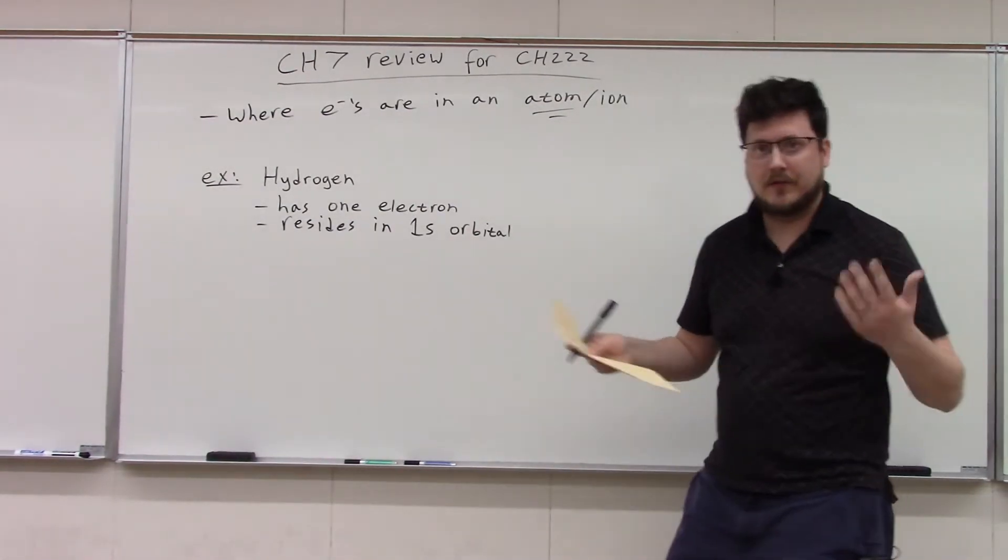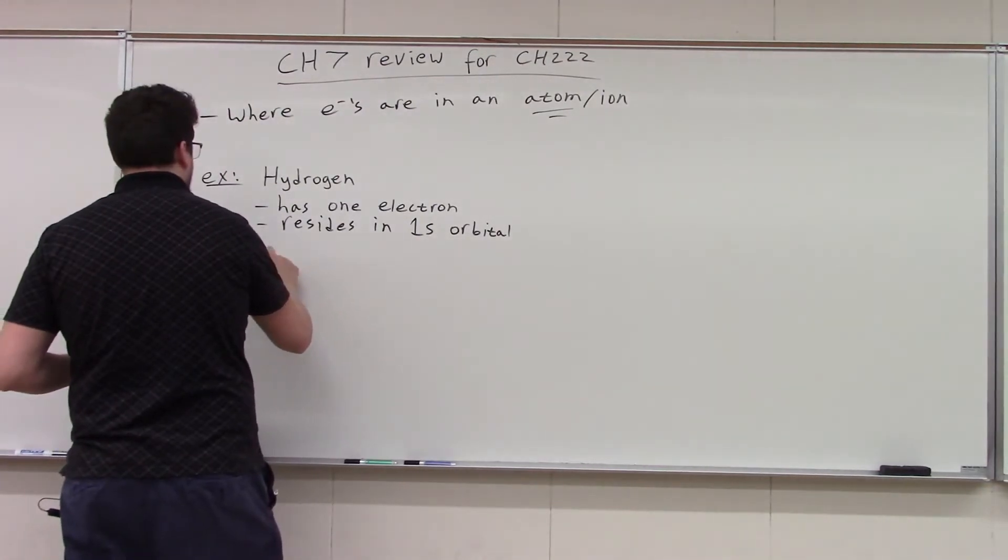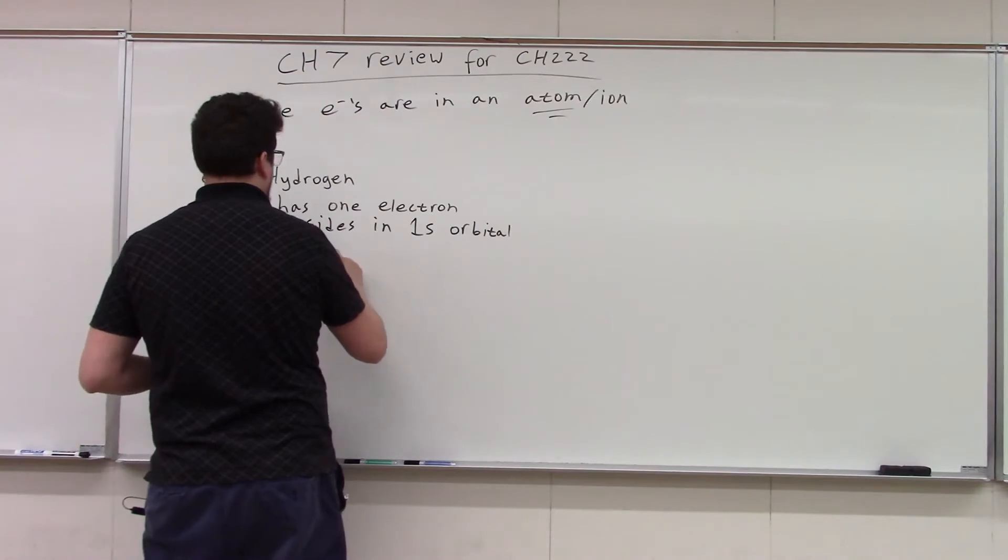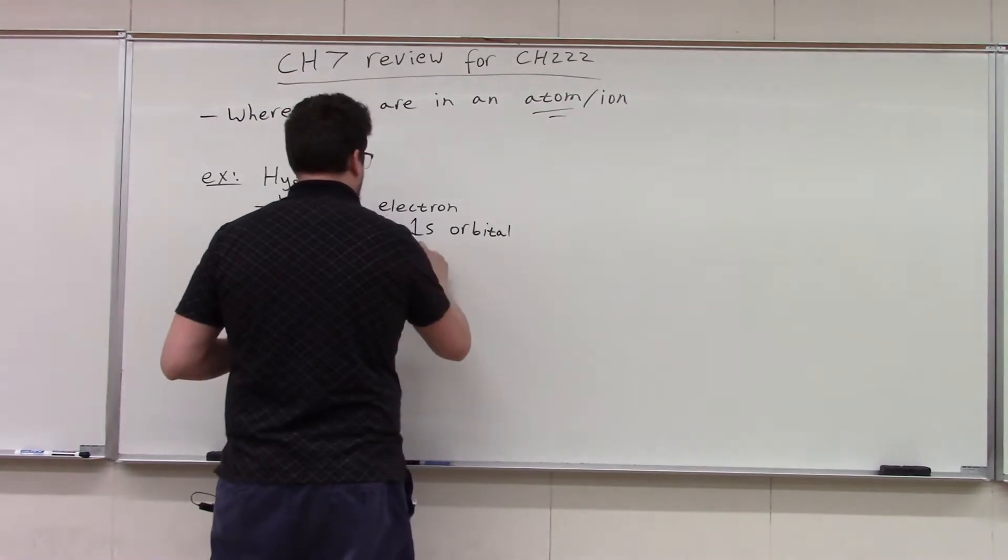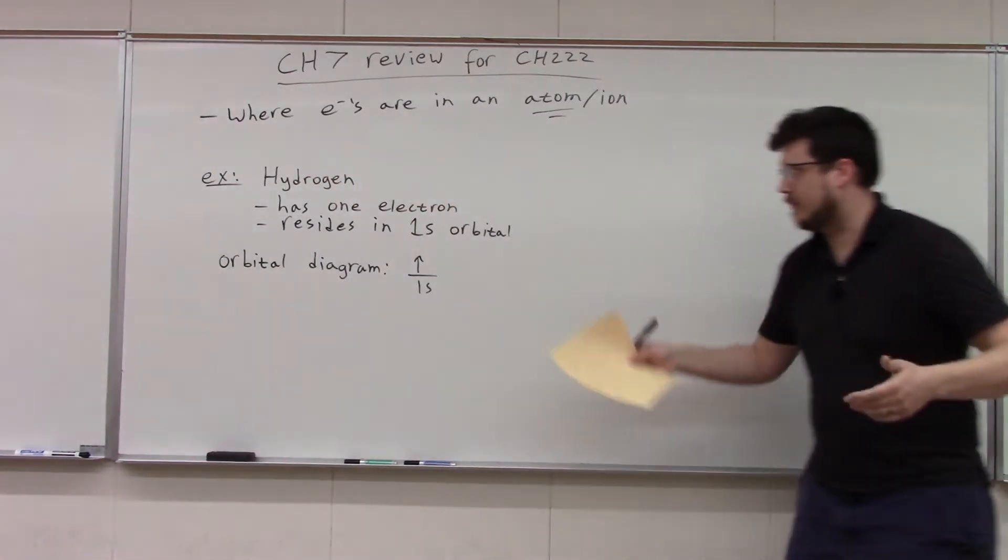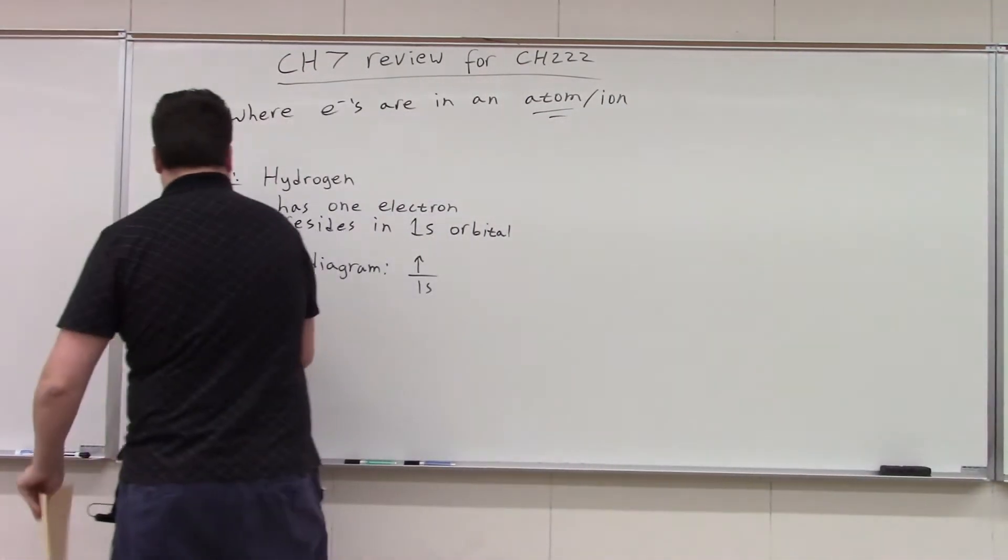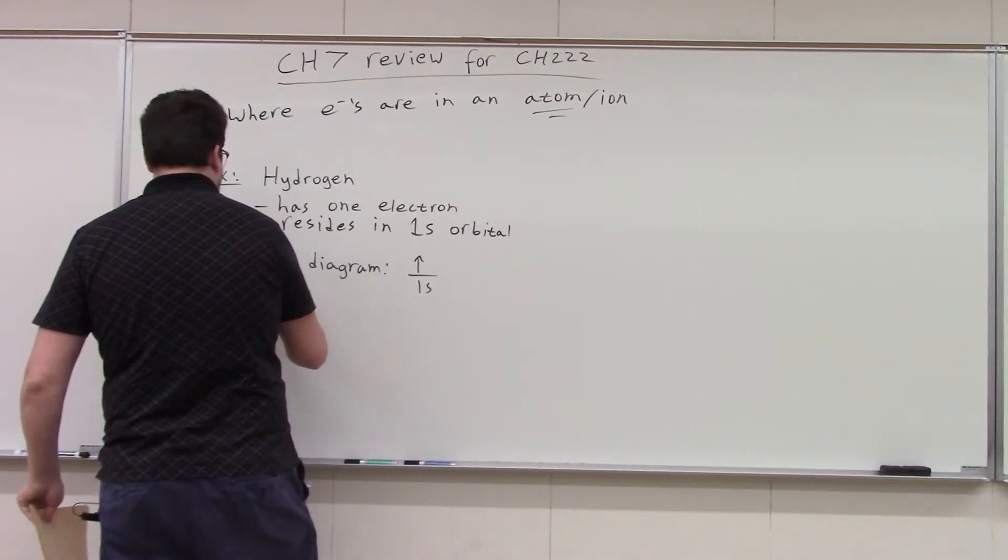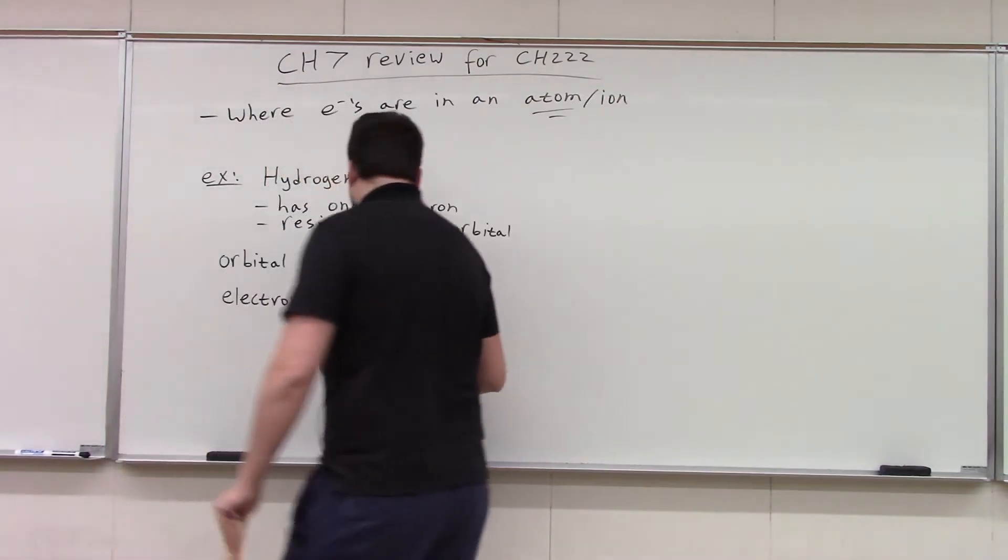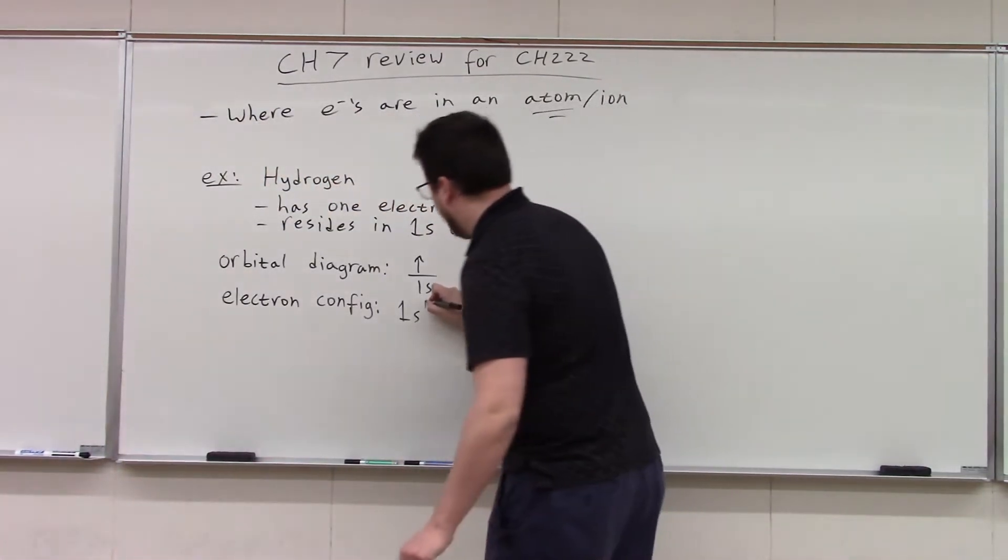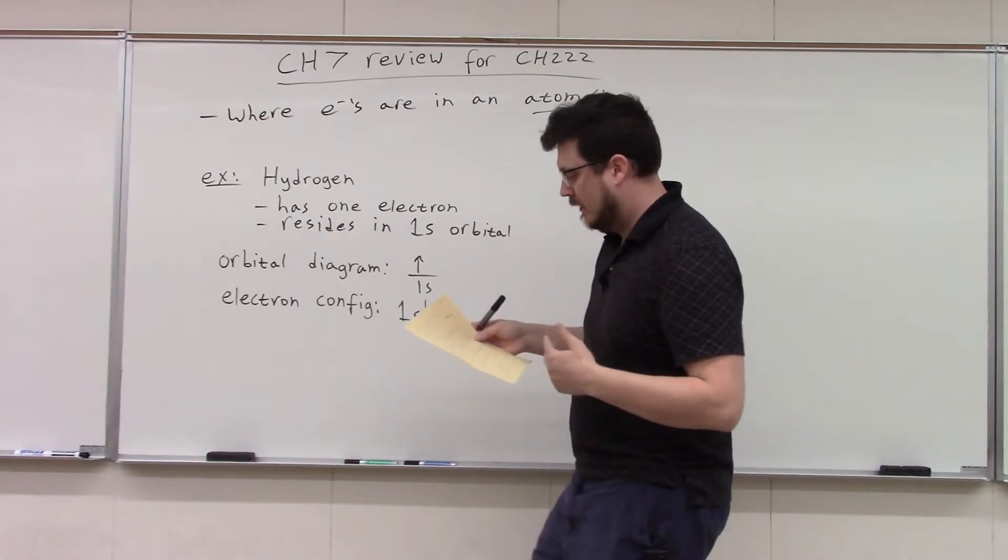So, that electron resides in the 1s orbital. Okay. So, there are a couple ways we could talk about this. There was the orbital diagram. So, we could kind of draw a diagram here. Call it the orbital diagram. We got one electron. We'll say it's spin-up. It's in that 1s orbital. That's the only orbital we have electrons in. You can also have the electron configuration. So, we got our electron config. We're talking about the same thing, just a different way. And we just go, okay, well, we got our 1s orbital. And there's one electron in it. So, it's 1s1. Again, not a lot of electrons to stack in here. We're starting at the very beginning.